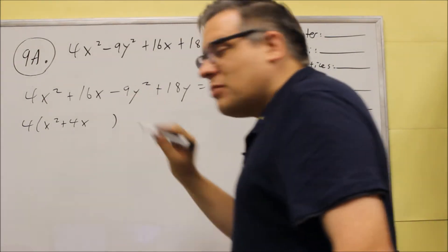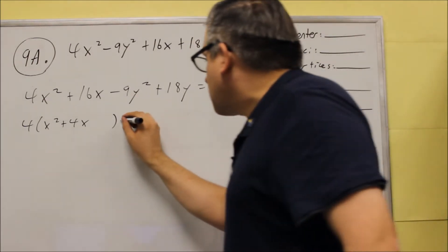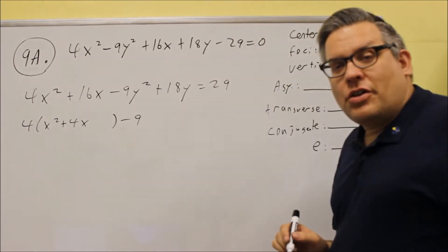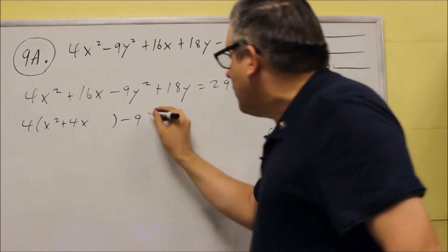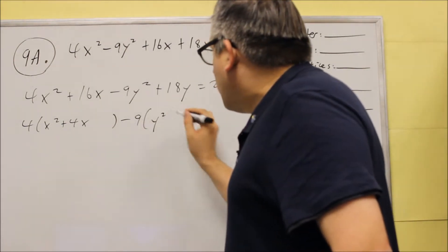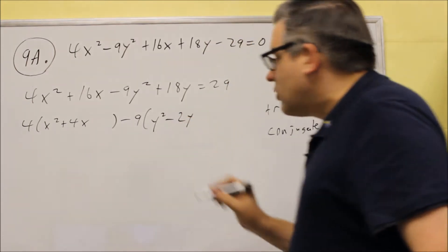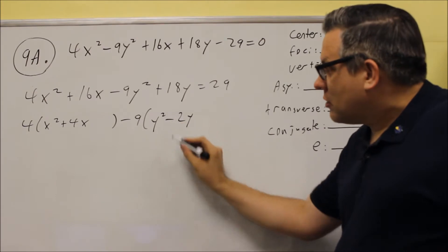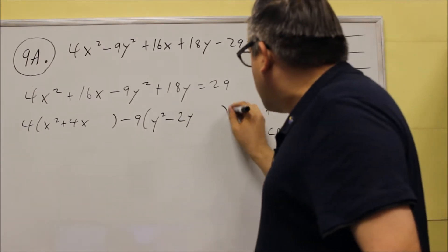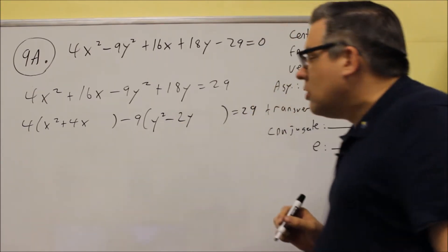The next one, if there's a negative sign in front, you want to factor out the negative. So we're going to factor out negative 9. It'll leave you with y² - 2y. Don't forget to change that sign there. And then, once again, you're going to leave a space. That's equal to 29.